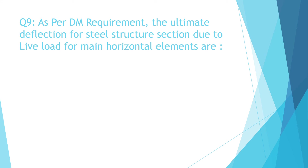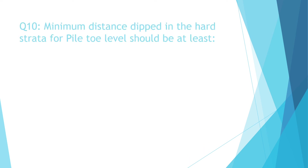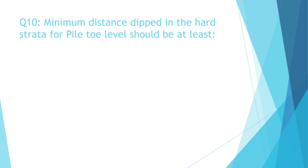Question 9: As per DM requirement, the ultimate deflection for steel structure section due to live load for main horizontal elements is: a) L/240, b) L/360, c) L/200, d) L/100. The correct answer is b) L/360.